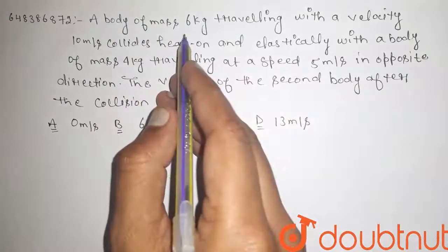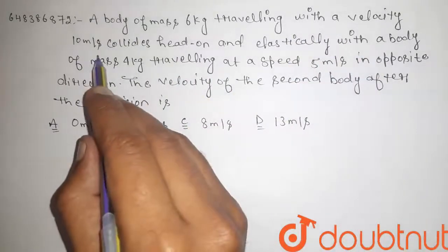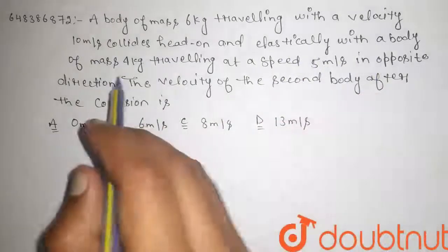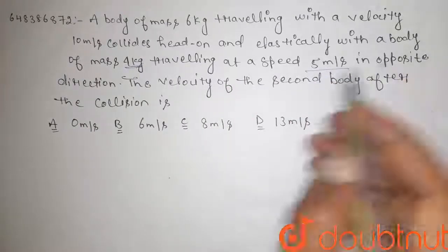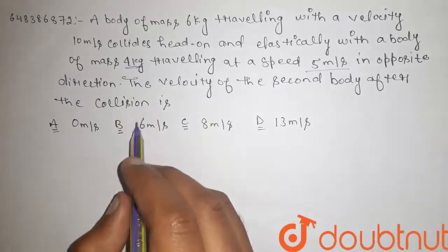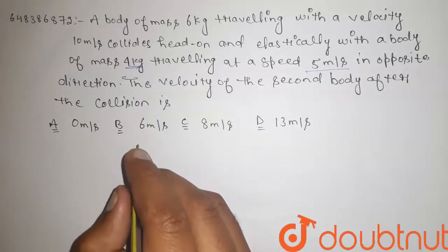A body of mass 6 kg traveling with a velocity 10 meter per second collides head on and elastically with a body of mass 4 kg traveling at a speed 5 meter per second in opposite direction. The velocity of the second body after collision is...